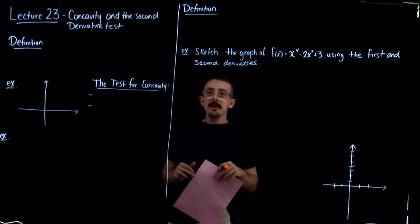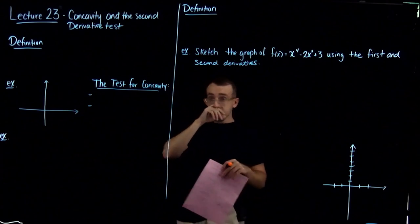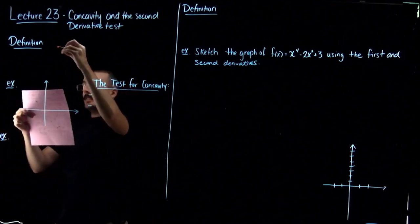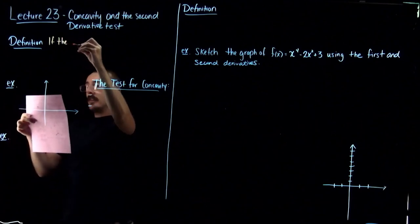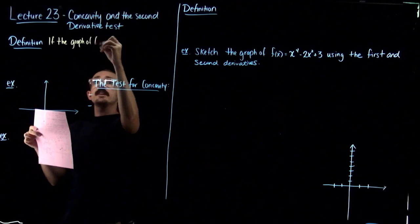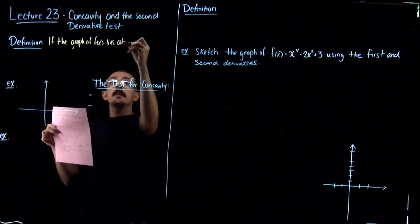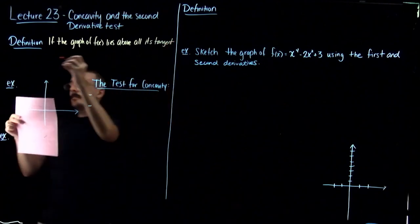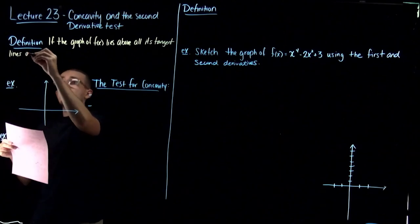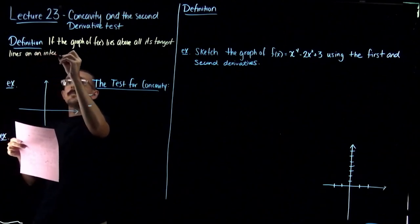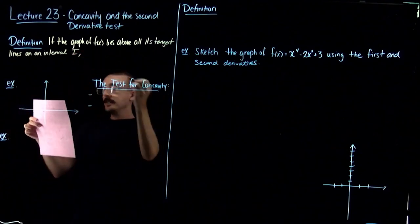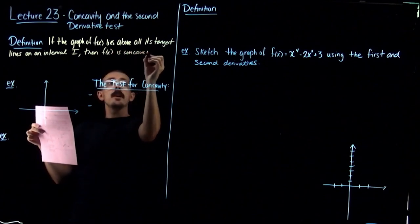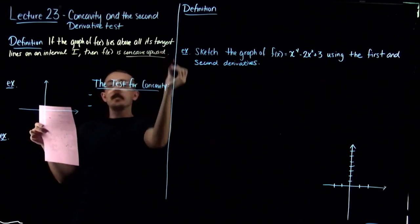Welcome to lecture 23 on concavity and the second derivative test. Let's begin with a definition of what it means to be concave up and concave down. If the graph of f(x) lies above all its tangent lines on an interval i, then f(x) is concave upward on that interval.